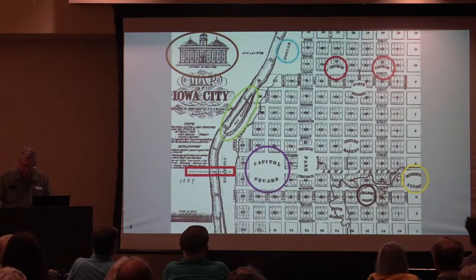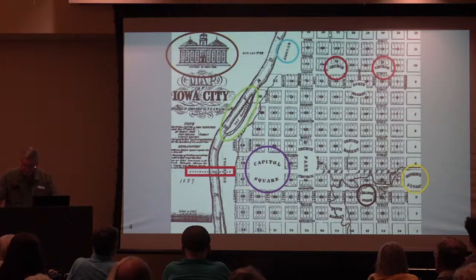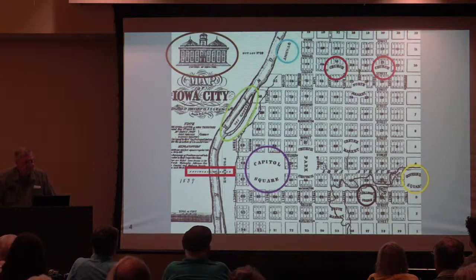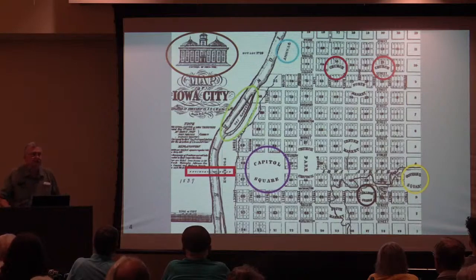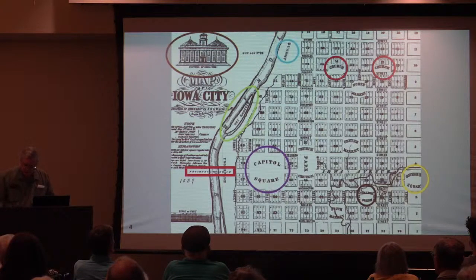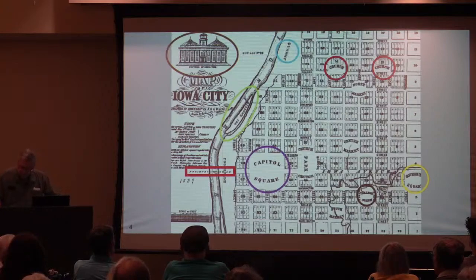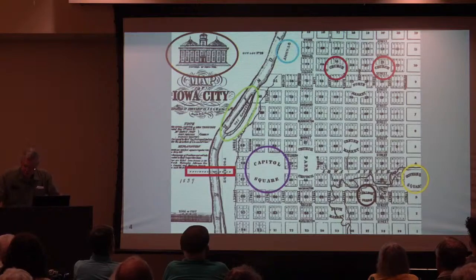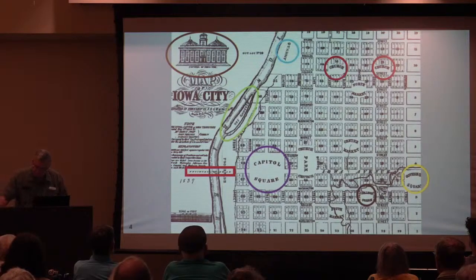College Green is circled in black, down near the lower right, and it still stands today as College Green Park — they proudly announce on the sign 1839. At the top of the map, where we see quarry circled in blue, we believe that's where some of the stone was taken for the exterior walls of the old capital, with other stone taken much further upstream. Dillon's Island is circled in green on the river. The area circled in purple, now known as the Pentecrest, was labeled Capitol Square. Circled in brown at the upper left is probably an early design for the old capital.